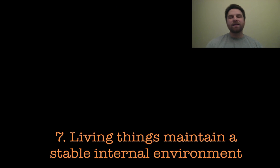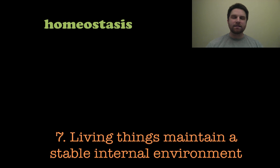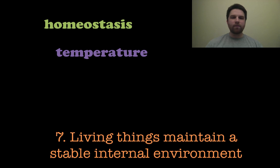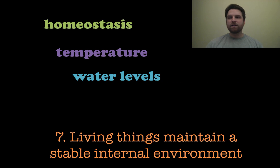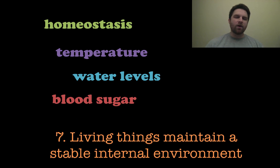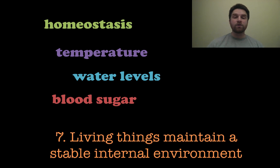Number seven, living things maintain a stable internal environment. We call this homeostasis — all the things you do to maintain your environment. You maintain your temperature by sweating or shivering, maintain water levels by drinking and peeing, and we also maintain our blood sugar levels, making sure we have enough energy in our bloodstream to carry out our normal functions.